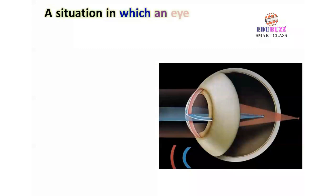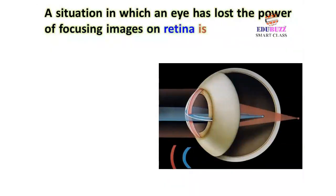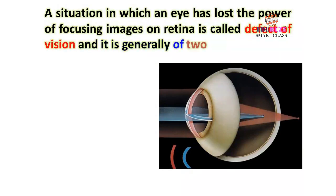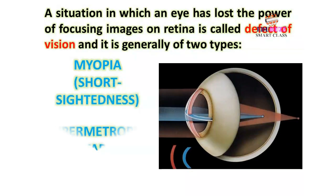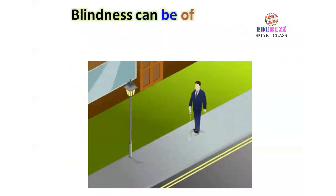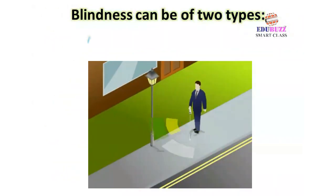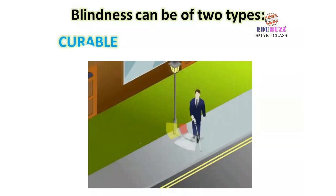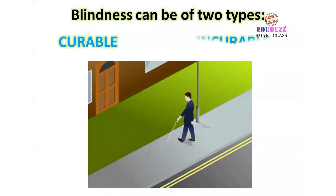A situation in which an eye has lost the power of focusing images on the retina is called a defect of vision, and it is generally of two types: myopia (short-sightedness) and hypermetropia (farsightedness). Blindness can also be of two types: curable and incurable.